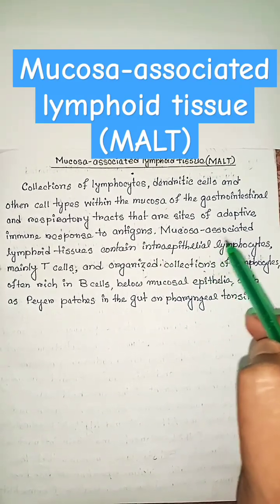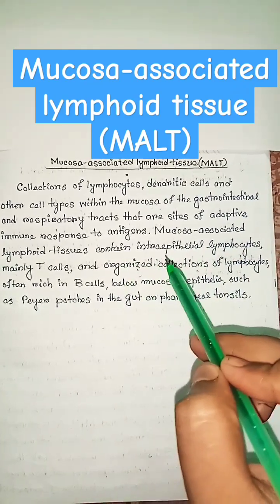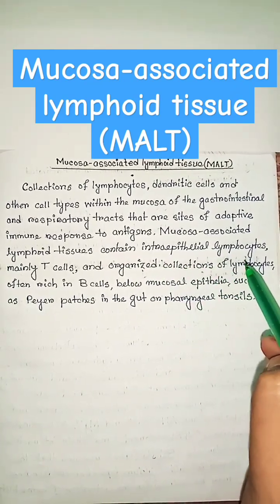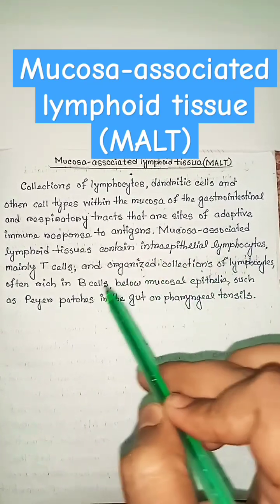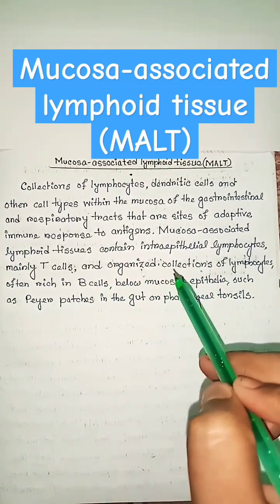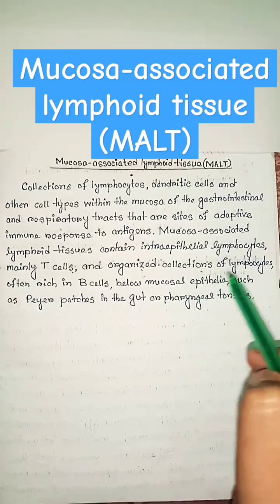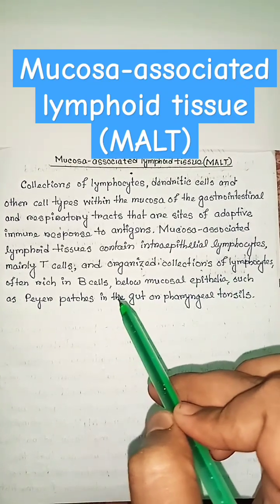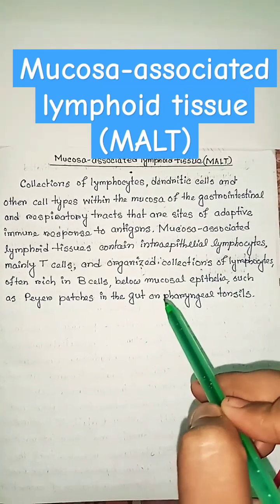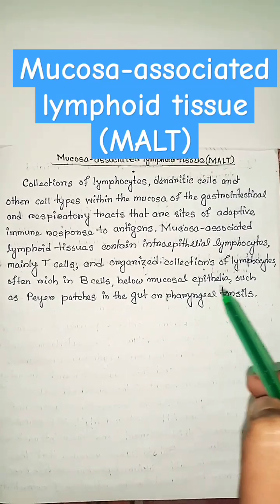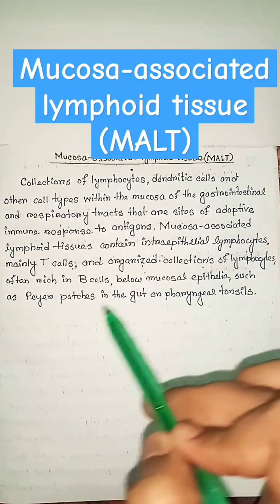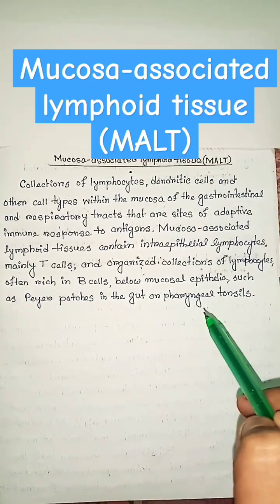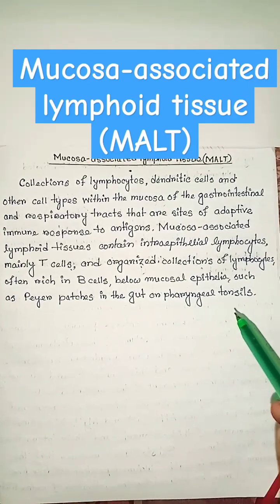Mucosa-associated lymphoid tissues contain intraepithelial lymphocytes, mainly T-cells, and organized collections of lymphocytes, often rich in B-cells, below the mucosal epithelium, such as Peyer's patches in the gut or pharyngeal tonsils.